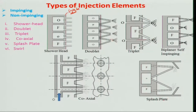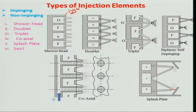If there is still a momentum problem, a splash plate can be used: essentially a doublet, but instead of impinging on each other, the jets impinge into a plate, converting into ligaments. The problem is if it is hypergolic, the plate gets heated and you pay a penalty. There is also the self-impinging atomizer, where oxidizer impinges into oxidizer and fuel into fuel — used for non-hypergolic propellant where liquid phase reactions are not required.